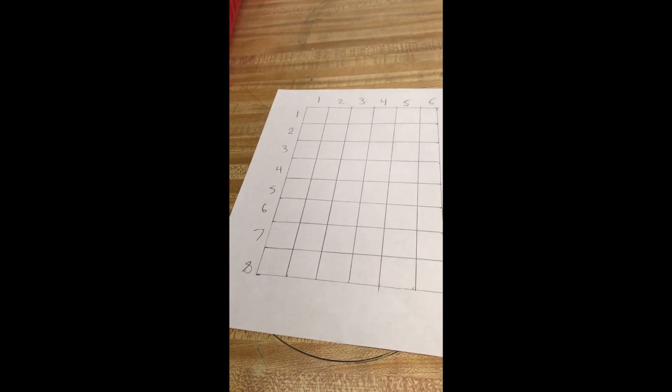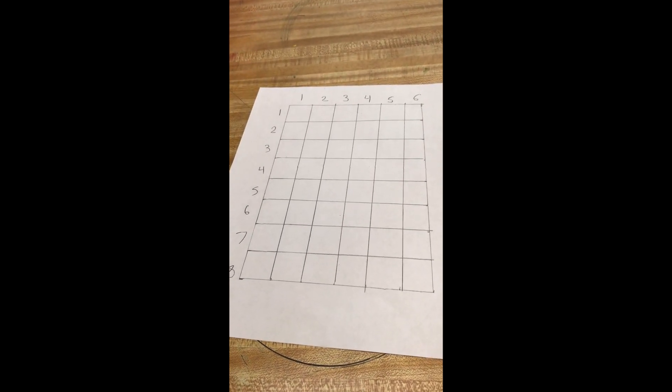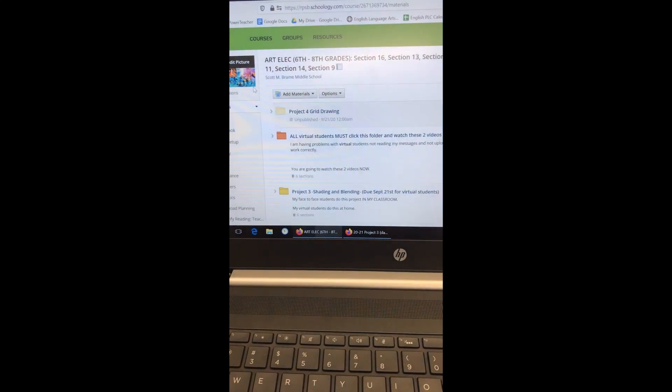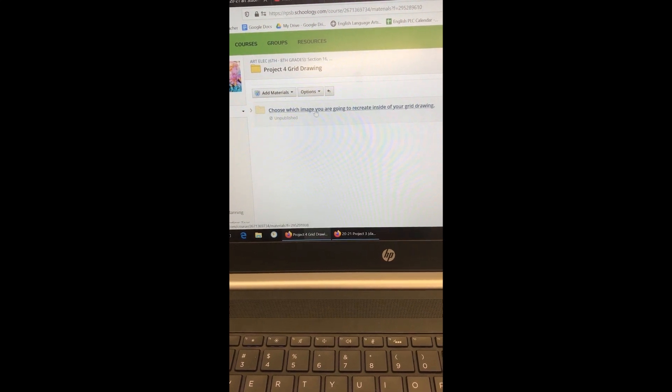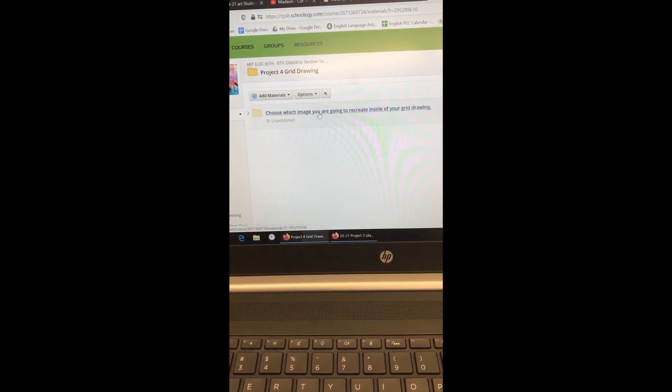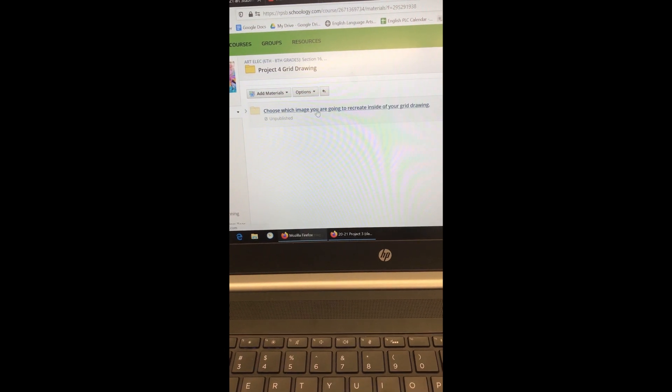Now we're going to put something inside of our grid. You're going to go to Schoology Art Class. Click on Project for Grid Drawing. And you see the area where it says choose which image you're going to recreate inside of your grid drawing.